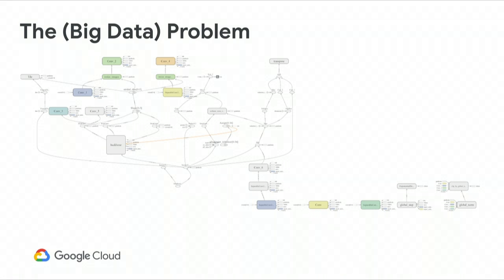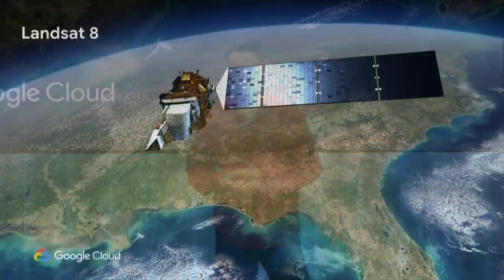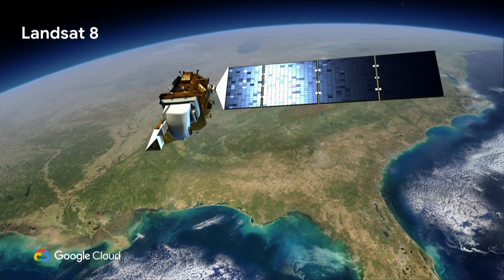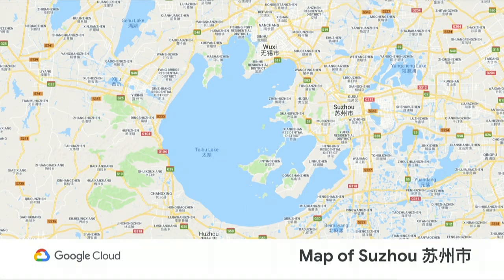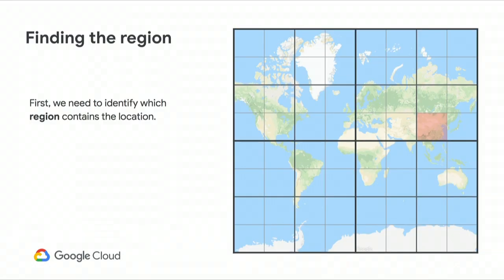Now that we have a trained model, we need to do predictions at scale. The Earth is big — really big. We have Landsat 8 satellite images for the entire world every 16 days since 2013 at 30-meter resolution. That's a lot of data. To handle it, we subdivide the world into smaller regions. Each individual region is independent, so they can be run in parallel. To classify a given location, we identify which region contains it and run the classification only on that region.